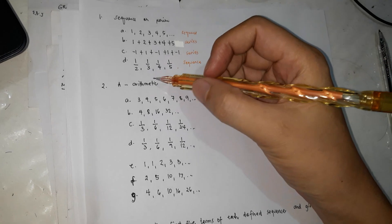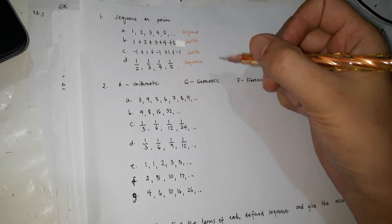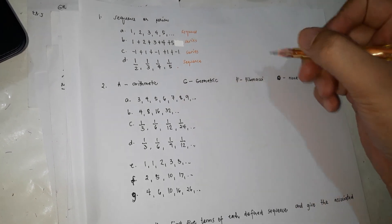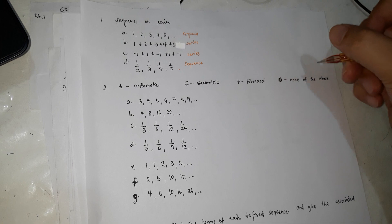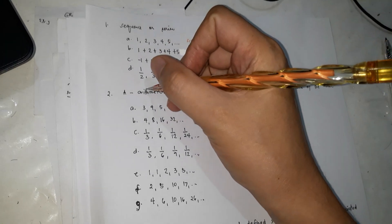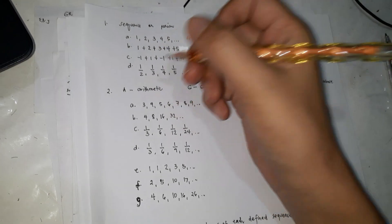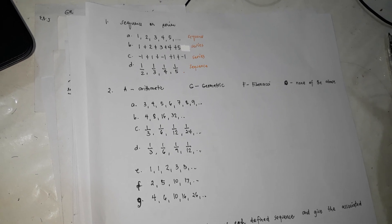Now we're going to identify what kind of sequence each one is. There is arithmetic, there is geometric, there is Fibonacci, and none of the above. For the arithmetic sequence, that's a sequence with a common difference — not common ratio.